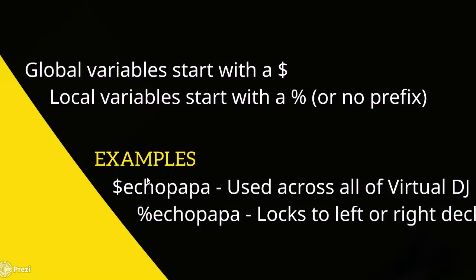You can name variables anything you want. For example, I might name two variables 'EchoPapa' — one with a dollar sign (global across all of Virtual DJ) and one without (locked to a deck). The advantage of local variables is that you can copy a script from one deck side to the other without renaming anything, because it only remembers the value for that one deck, whereas a global variable would be shared across both sides.